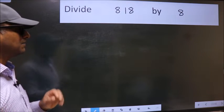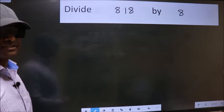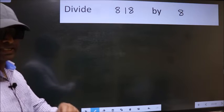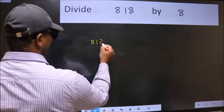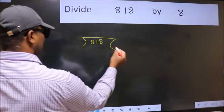Divide 818 by 8. To do this division, we should frame it in this way. 818 here, 8 here.